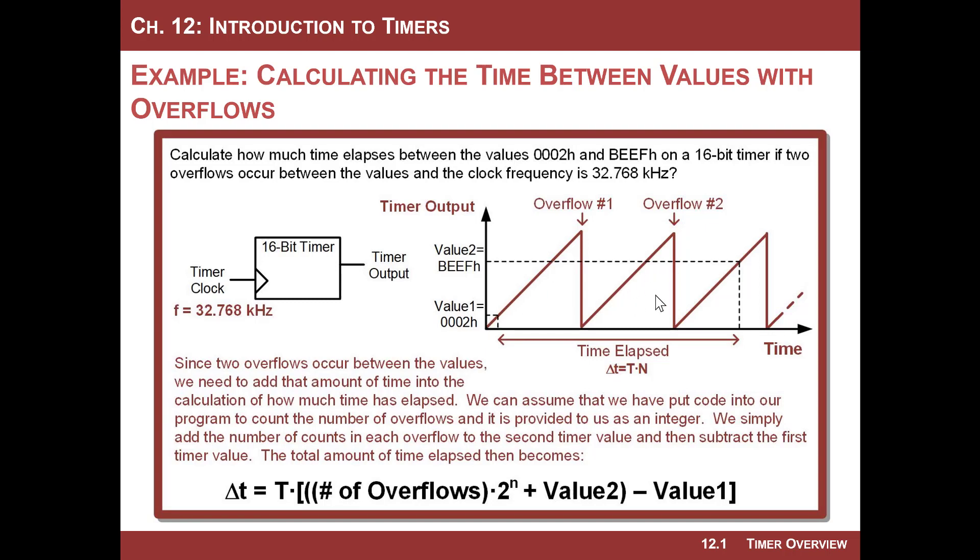Well, if I look at this picture, it really kind of explains how you calculate this. I can think of this, the way my brain works is I look at this and I go, well, it's almost like if you started at zero, you went one overflow, two overflows. Then you went up to BEEFh and then you had to take away that little value. So then you had to come back just a little bit.